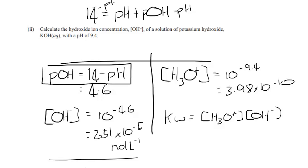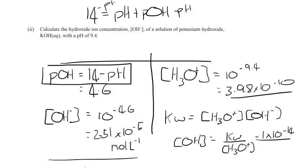So we'd rearrange that to OH- equals KW divided by H3O+, which is 1 times 10 to the power of negative 14, divided by this value here, 3.98 times 10 to the power of negative 10. And so that'll equal 2.51 times 10 to the negative 5, the same as what we've got over there.